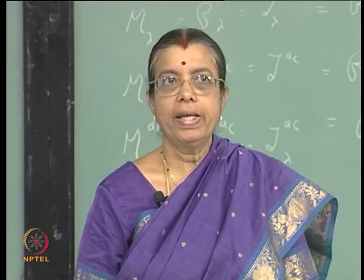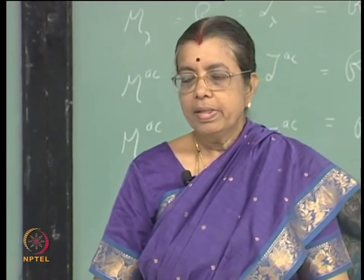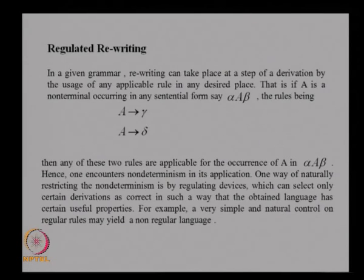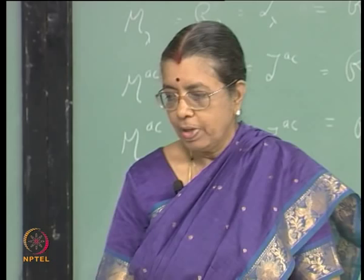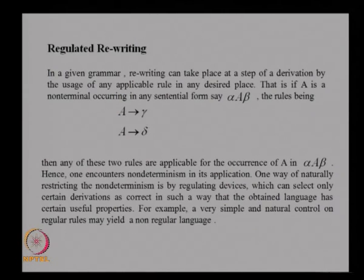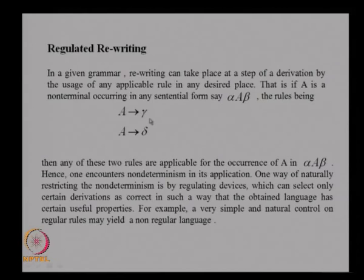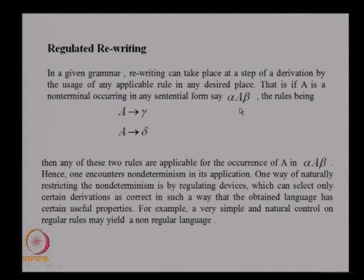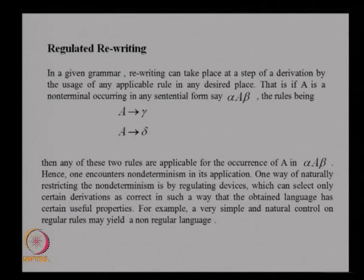What do we mean by regulator rewriting? The application of the rules is regulated by some external mechanism. In a given grammar, the rewriting can take place at a step of the derivation. We have a sentential form alpha A beta. At this stage, you can apply a rule A goes to gamma and get alpha gamma beta, or apply the rule A goes to delta and get alpha delta beta. There is non-determinism there, but if we try to control which rule is applied at that stage, the derivation is being regulated — it is being controlled.